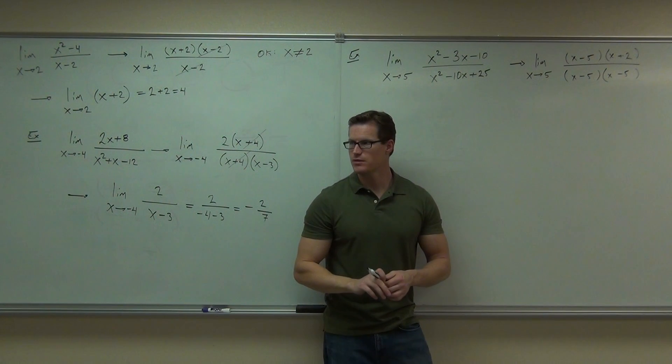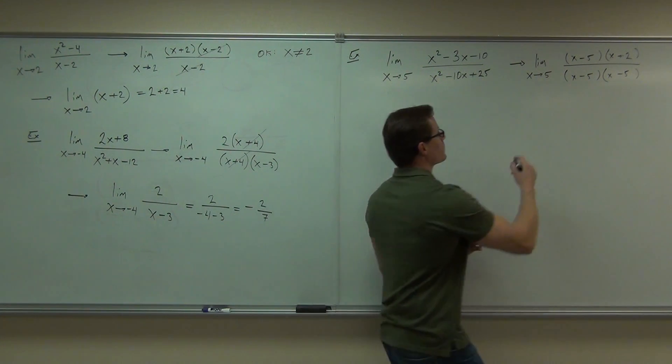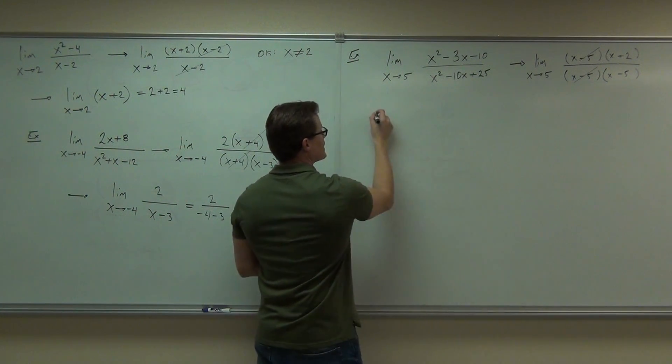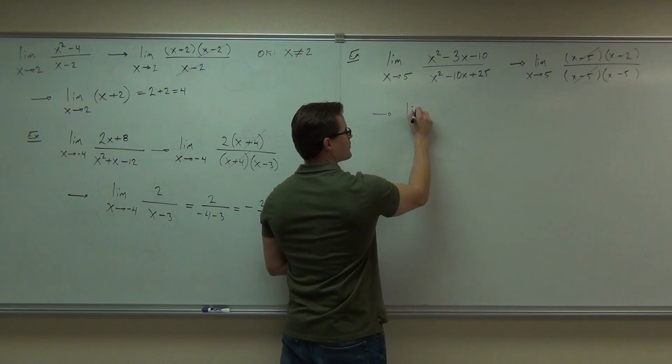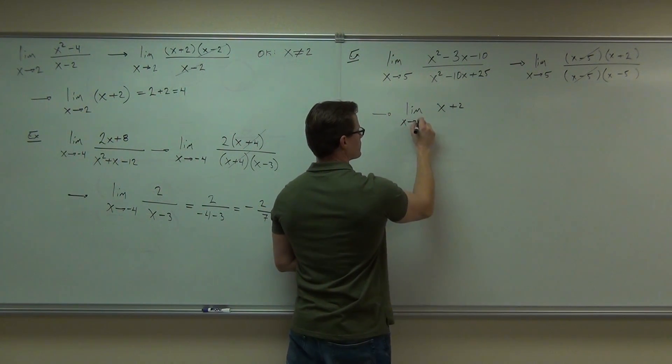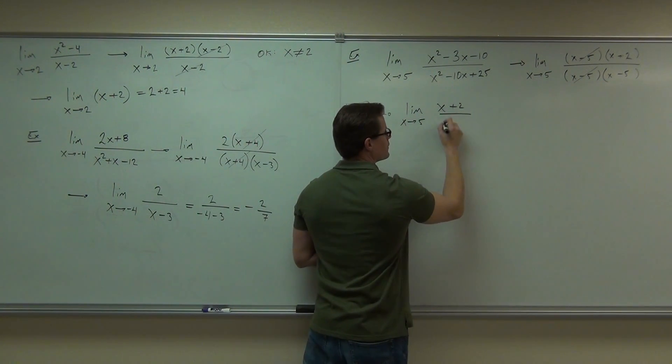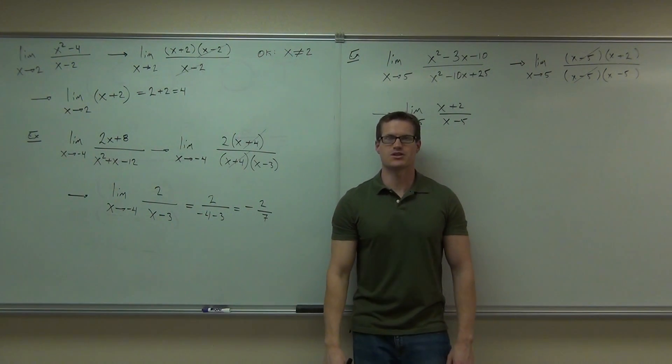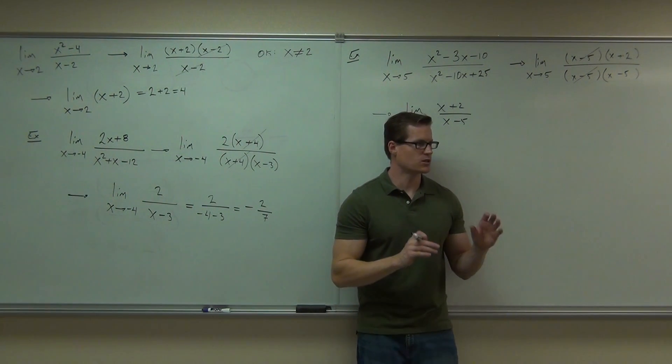Do you see anything that simplifies? Wait, not both x minus 5s? So we go here and here, yes? And what we get out of this, this is an important example for you to see. You get x plus 2, x is still approaching 5, over x minus 5. Try to plug in the 5. What are you going to get? Zero. You're going to do 7 over 0. Is that still a problem? Yes. Oh man.